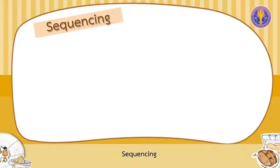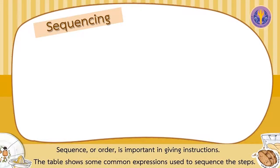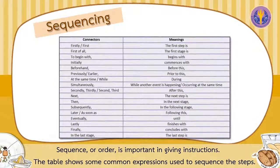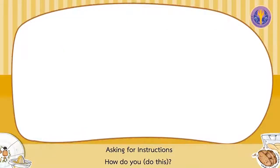Make sure you distinguish between giving instructions — that is, telling someone how to do something — and describing a process, that is, describing how something happens. Sequencing: sequence or order is important in giving instructions. The table shows some common expressions used to sequence the steps.